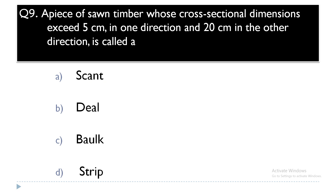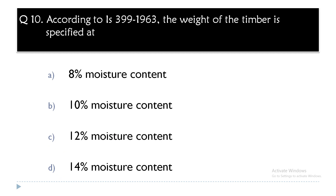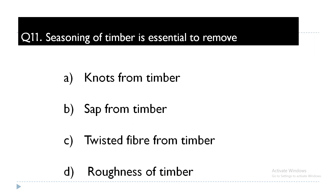Question 9: A piece of sawn timber whose cross-sectional dimension exceeds 5 cm in one direction and 20 cm in the other direction is called — scant, deal, bulk, or strip? Answer: bulk. Question 10: According to IS 399-1963, the weight of timber is specified at — 8%, 10%, 12%, or 14% moisture content? Answer: 12% moisture content. Seasoning of timber is essential to remove — nodes, sap, twisted fibre, or roughness? Answer: sap from the timber.